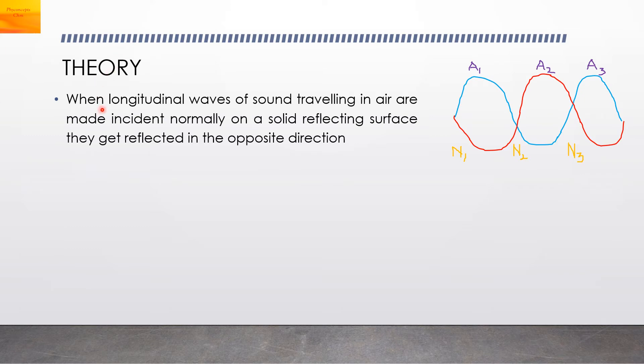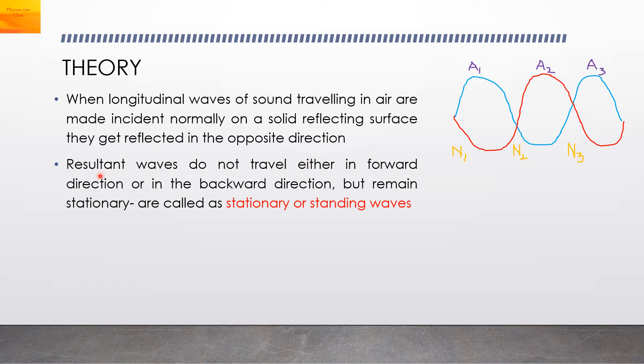Theory: When longitudinal waves of sound traveling in air are made incident normally on a solid reflecting surface, they get reflected in the opposite direction. Resultant waves do not travel either in forward or backward direction but remain stationary. Such waves are called stationary waves or standing waves as shown in this figure.